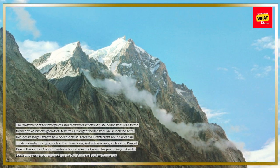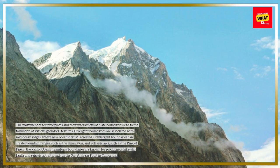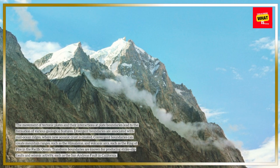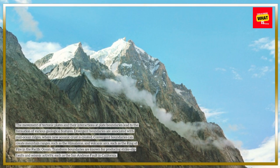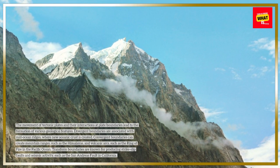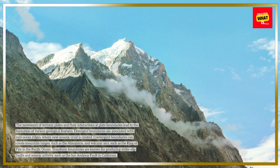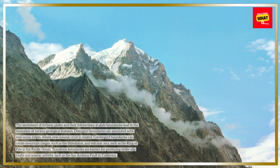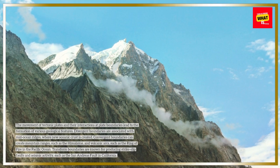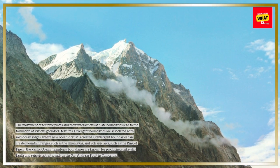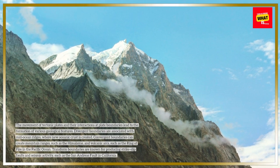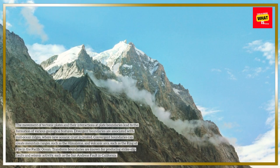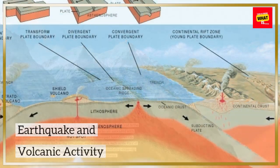Convergent boundaries can create mountain ranges, such as the Himalayas, and volcanic arcs, such as the Ring of Fire in the Pacific Ocean. Transform boundaries are known for producing strike-slip faults and seismic activity, such as the San Andreas Fault in California.